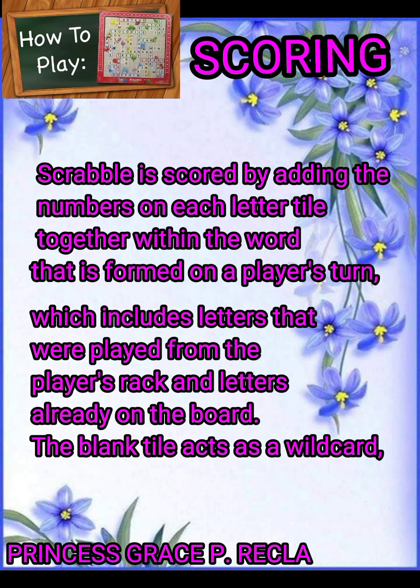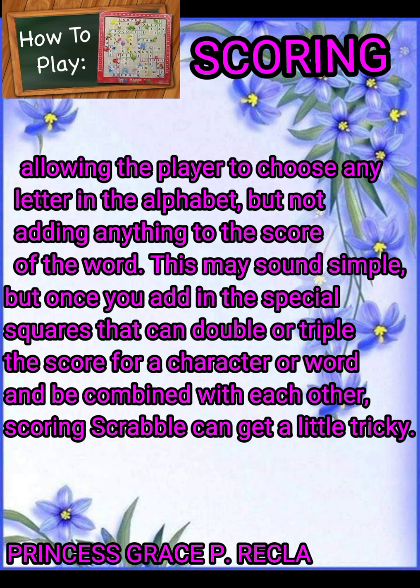Scoring. Scrabble is scored by adding the numbers of each letter tile together within the words formed on a player's turn, which includes letters played from the player's rack and letters already on the board. The blank tiles act as a wild card, allowing the player to choose any letter in the alphabet, but not adding anything to the score. Once you add special squares that can double or triple the score for a letter or word — and can be combined with each other — scoring Scrabble can get a little tricky.